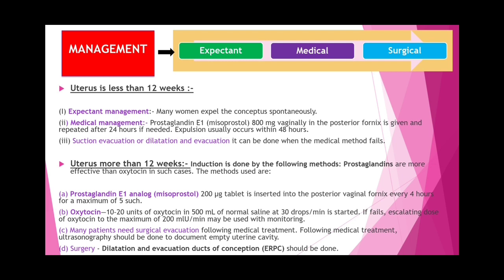Suction evacuation and dilation and evacuation can be done when medical method fails. If uterus is more than 12 weeks, induction is done using prostaglandins — more effective than oxytocin. Misoprostol 200 mcg tablets inserted into posterior vaginal fornix every 4 hours for maximum 5 doses, plus 20 units of oxytocin in 500 ml normal saline at 30 drops per minute. Many patients need surgical evacuation following medical treatment; ultrasonography should document empty uterine cavity.